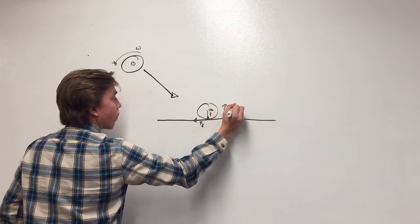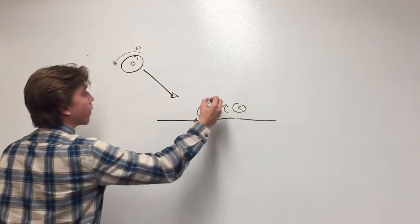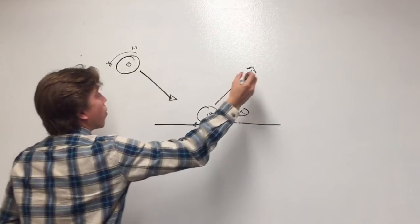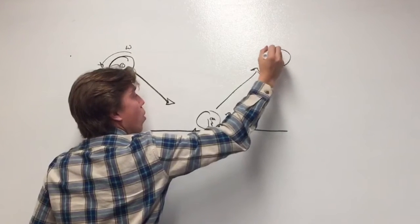The torque then is into the page, which causes the ball to reverse its spin direction. Thus, the torque on the system must be much greater than the angular velocity.